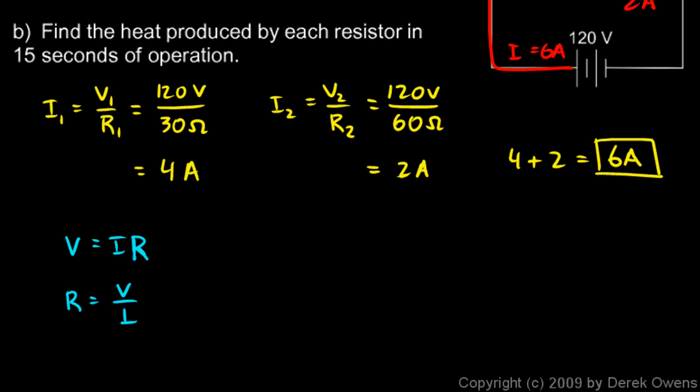R is V over I, and that comes out to 60 ohms over 3, so 20 ohms is the total resistance.